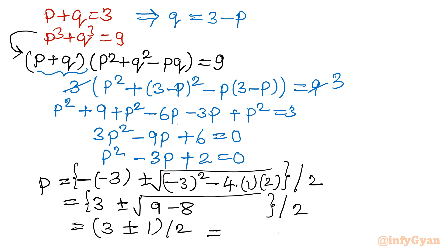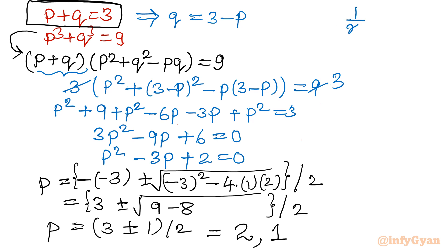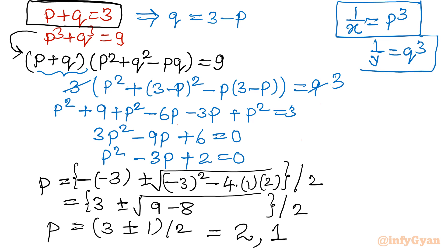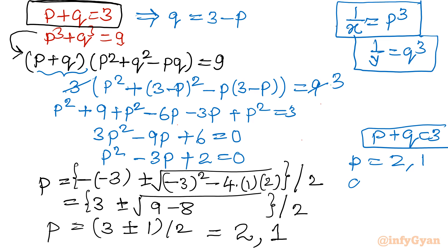Taking the plus sign gives p = 4/2 = 2. Taking the minus sign gives p = 2/2 = 1. Remember p + q = 3 and our substitution was 1/x = p³, 1/y = q³, so we need to find x and y. If p = 2 then q = 1; if p = 1 then q = 2. Both pairs sum to 3.